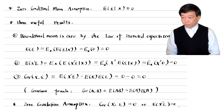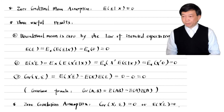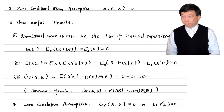The zero conditional mean assumption is for finite samples or small samples. In a finite sample, the zero conditional mean assumption is required to obtain unbiased OLS estimates. The zero correlation assumption is for large samples — we need it to have consistent OLS estimates.